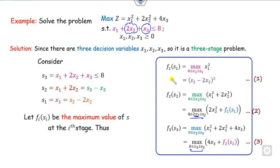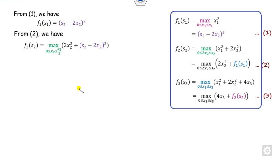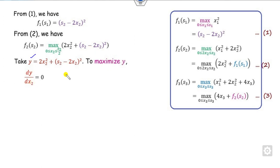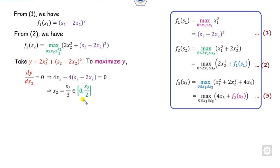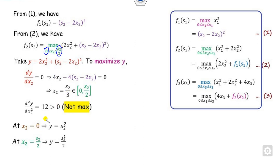To solve, start with equation 1 — it is independent of x1, so it stands as is. Substitute f(1, s1) into equation 2. To maximize, take y as a function of x2. The rule for maximization: first derivative equals 0, second derivative must be less than 0. The critical point is found, and it lies within the domain. However, the second derivative is greater than 0, meaning this is not a maximum. So there is no need to compute the value at the critical point.